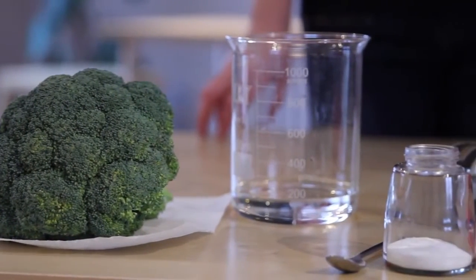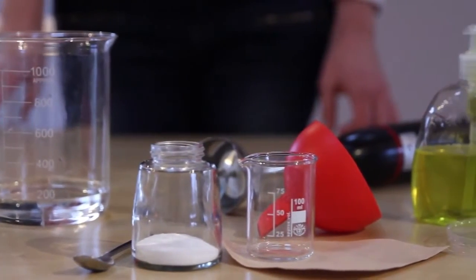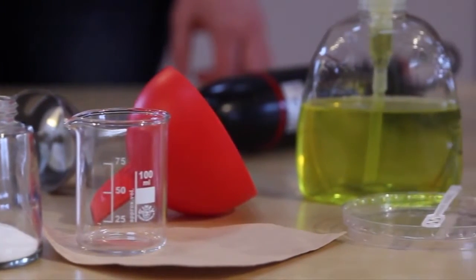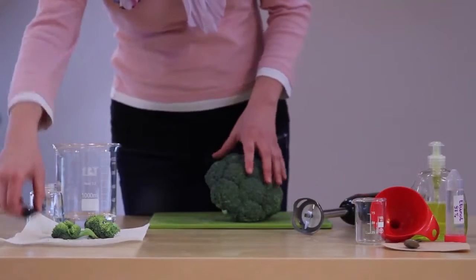Fresh broccoli, a bigger container, teaspoon, kitchen salt, a smaller container, a funnel, a blender or a knife, a coffee filter, washing up liquid, a stirrer, 10 milliliters of chilled alcohol, about 300 milliliters of ordinary tap water.